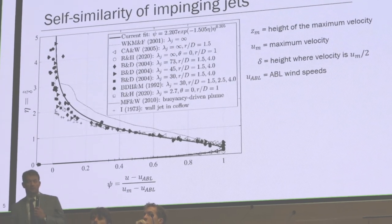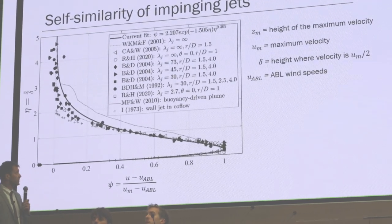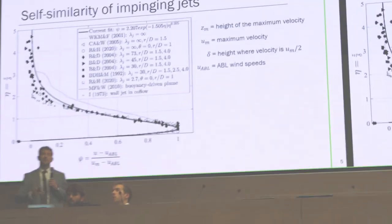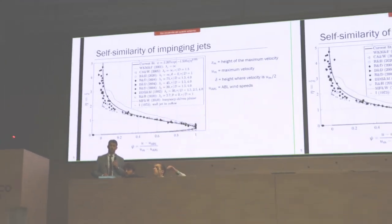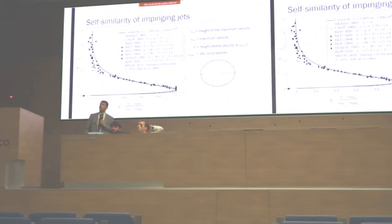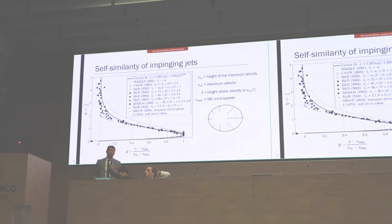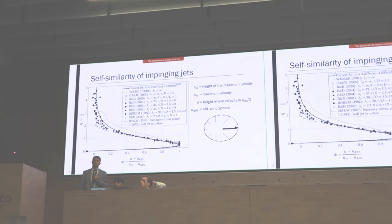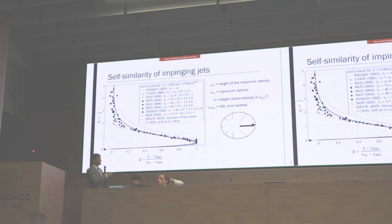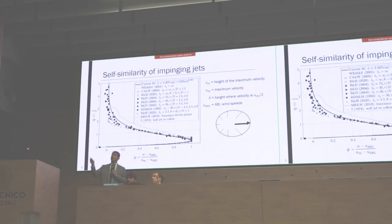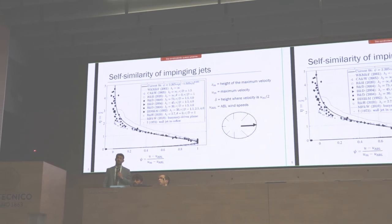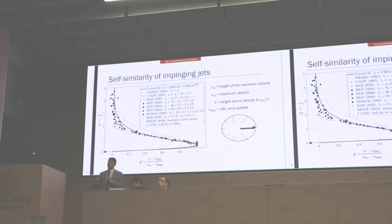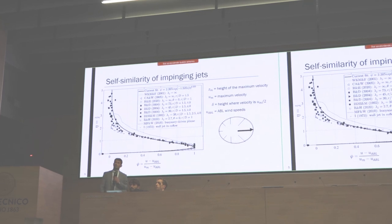However, there are two tricks in this plot. First, cross flow or ABL winds need to be substantially weaker than the downdraft. Second, this graph can only be obtained for this part of the outflow. We weren't able to find any normalization function that would collapse profiles for any other part. However, this is also the most interesting part because this is where the maximum velocity happens at least most of the time.